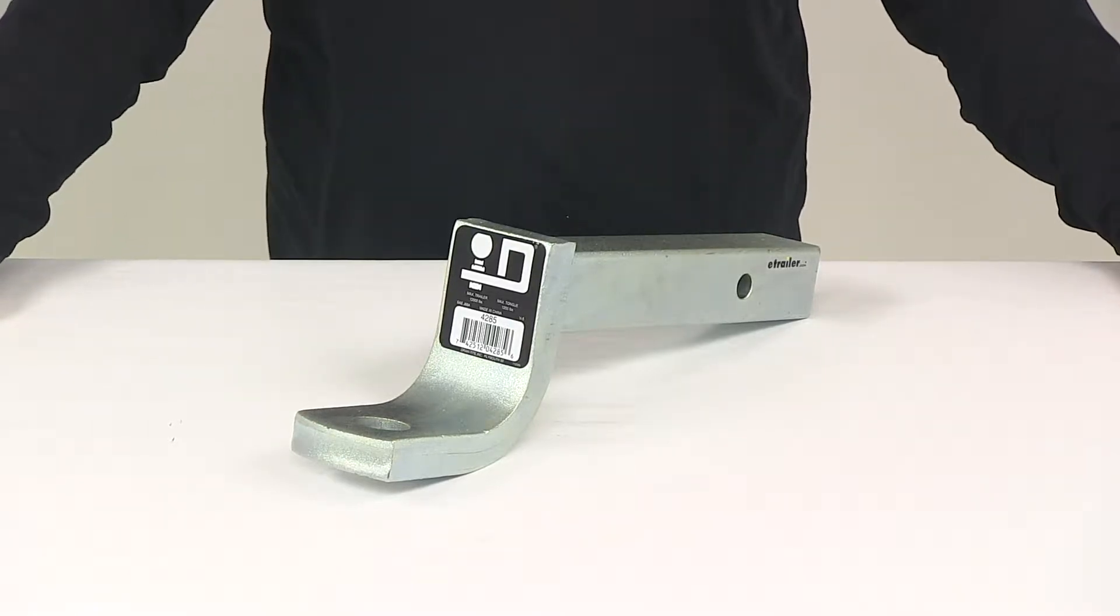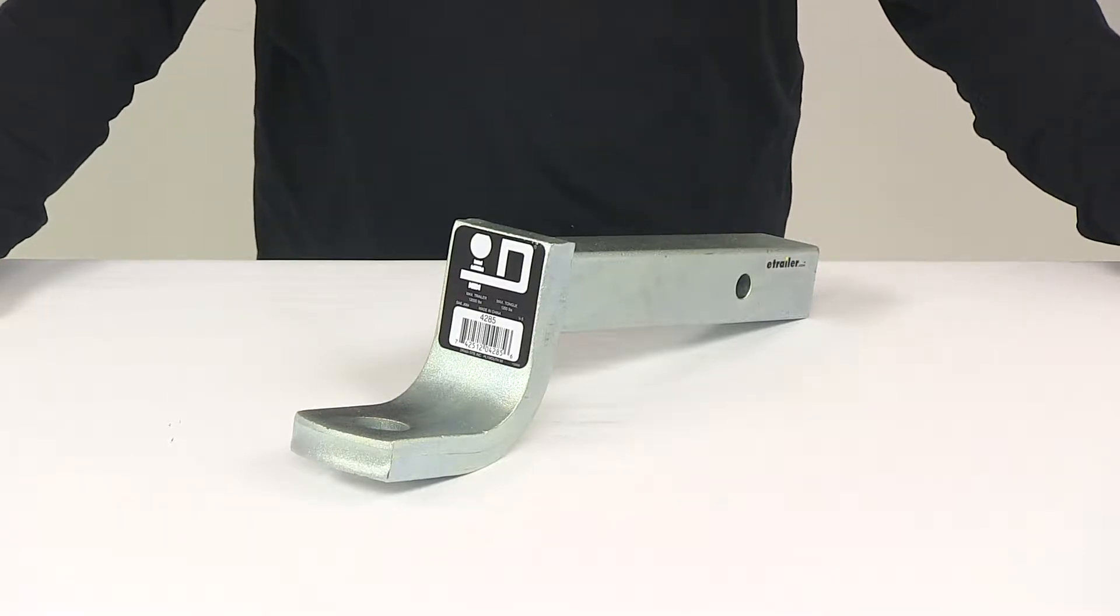Today we're going to be taking a look at a draw-type ball mount. This ball mount has a gross towing weight capacity of 12,000 pounds and a maximum tongue weight capacity of 1,200 pounds.